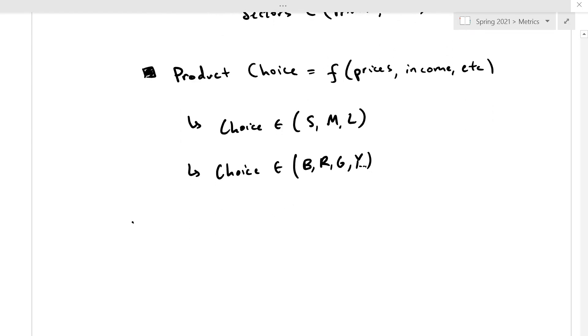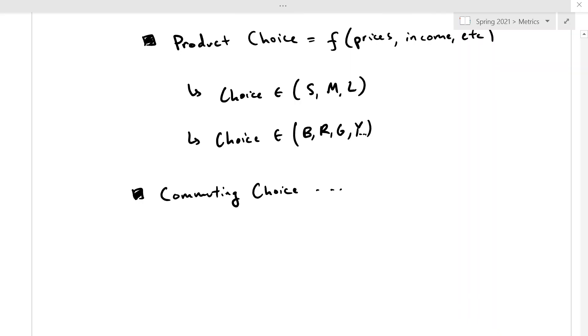And a common, say, transportation economics is commuting choice. And so you might model that as a function of several things. Gas prices, income, distance to work, so on and so forth. And you can model that choice as whether somebody drives, bikes, walks, public transport, and maybe some other possibilities there. But you could use a multinomial logit to try to model how people behave on their commute to work, for example.